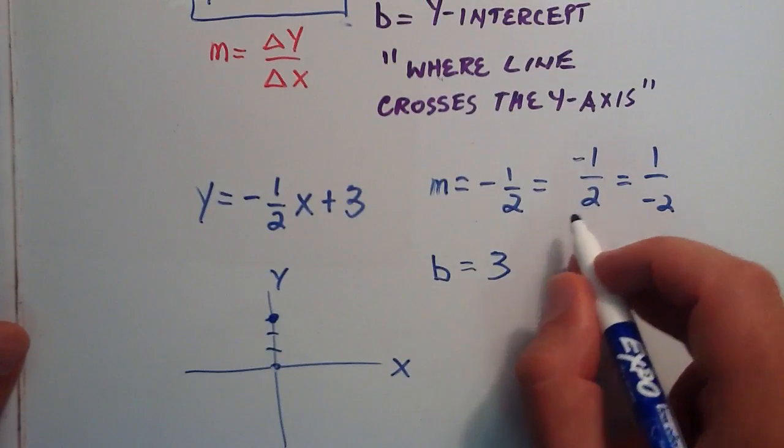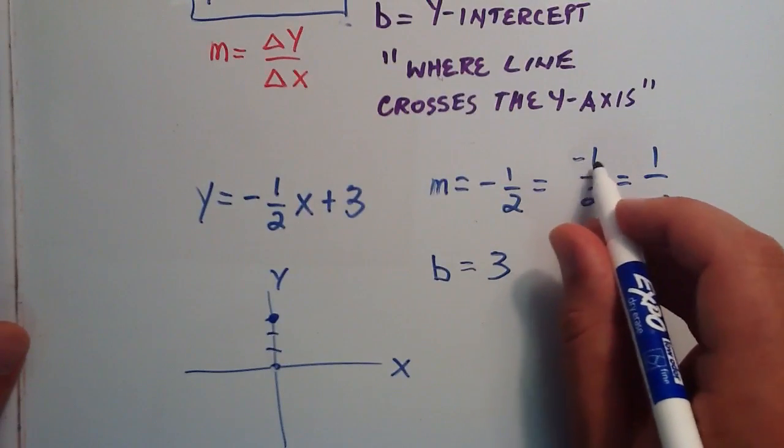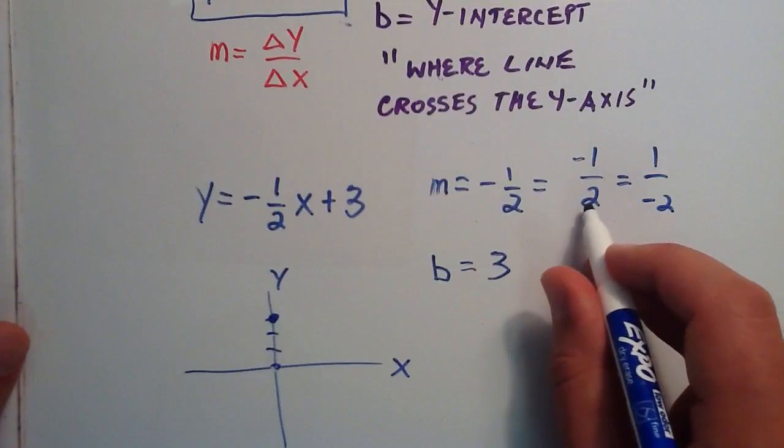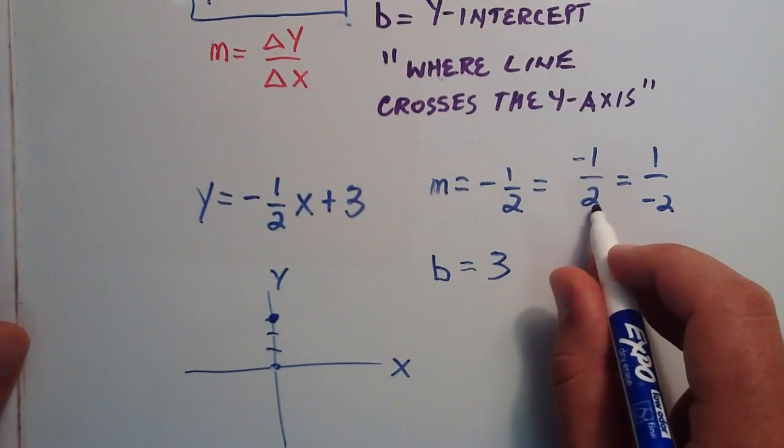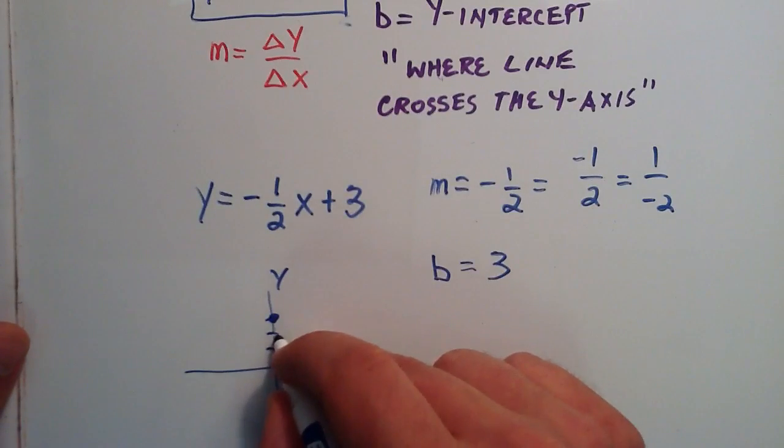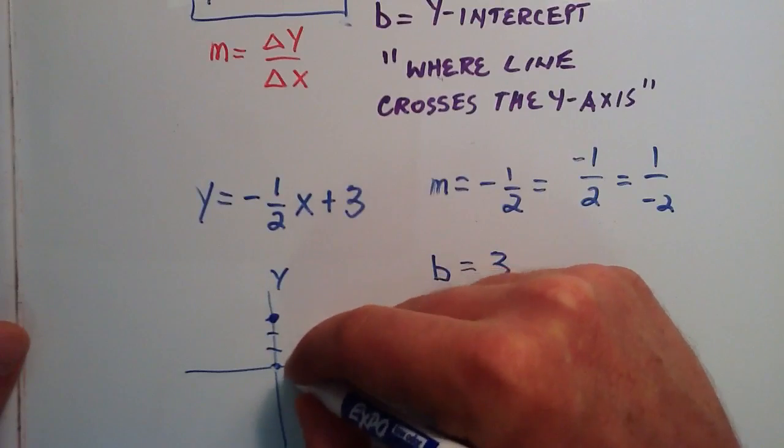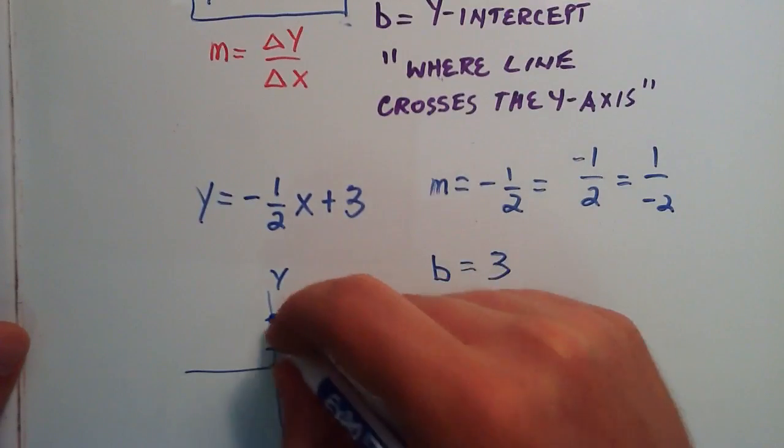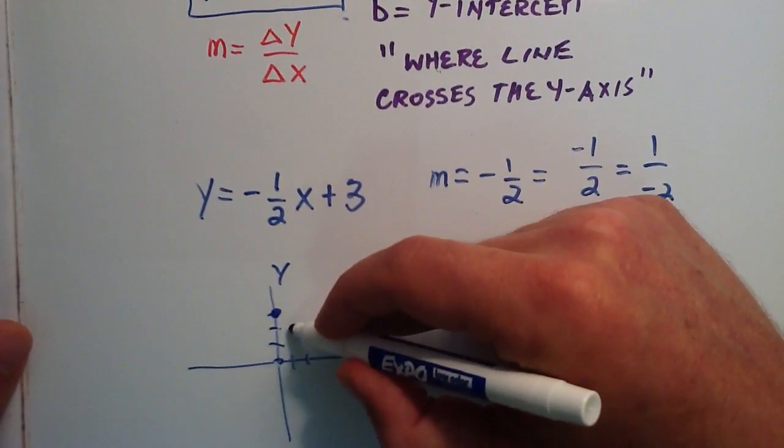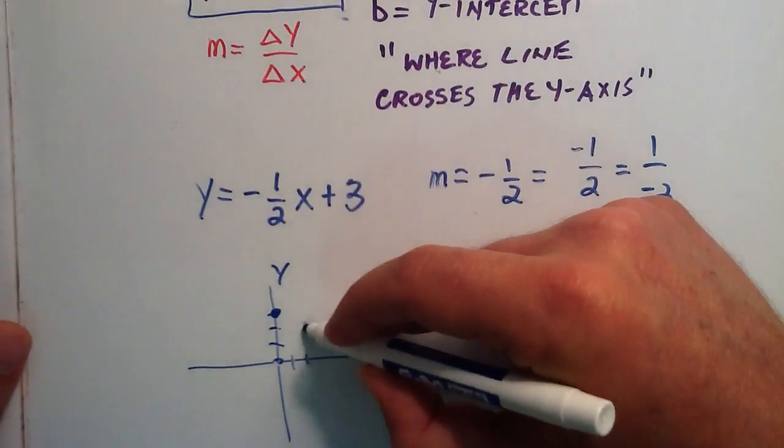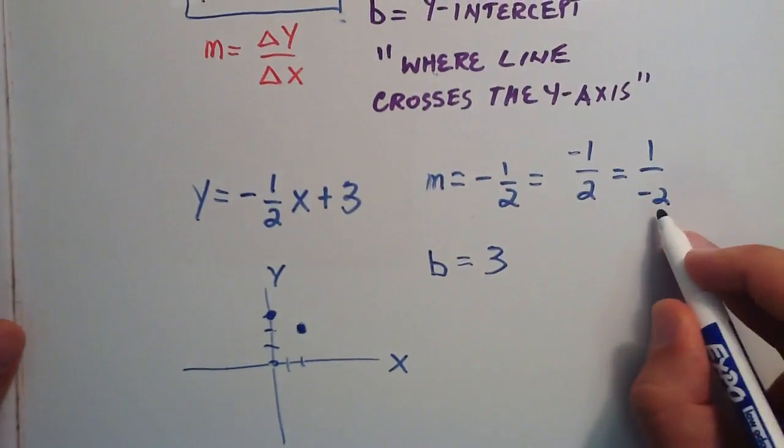So this says it changes negative one in the y-direction as it changes positive two in the x-direction. So we go negative one in the y-direction, and then positive one, two in the x-direction. So negative one in the y, and positive one, two in the x gives us a point right there.